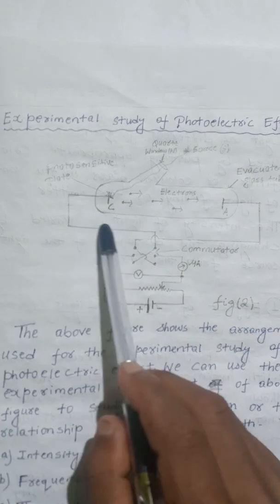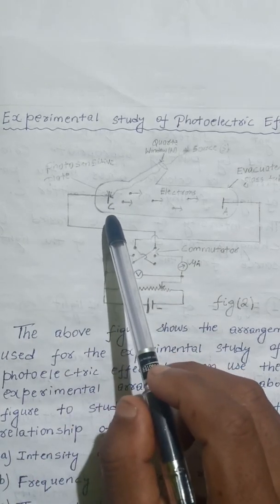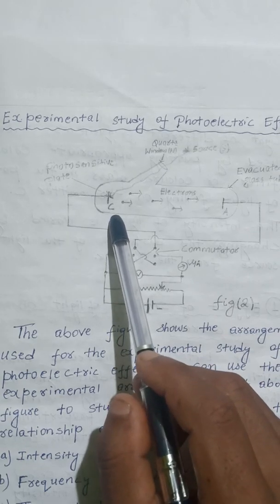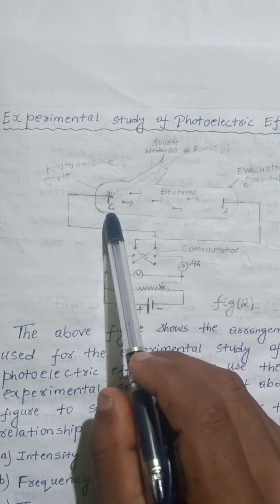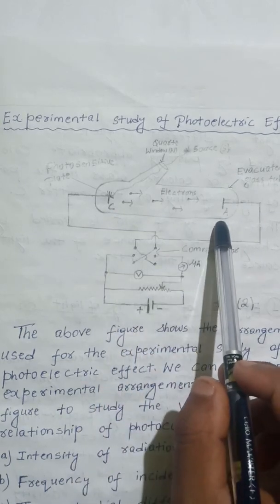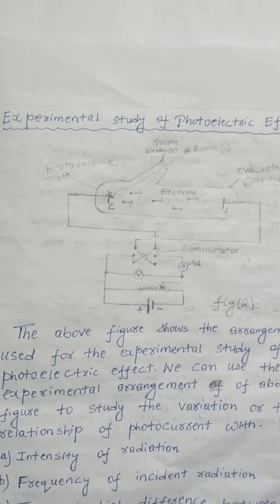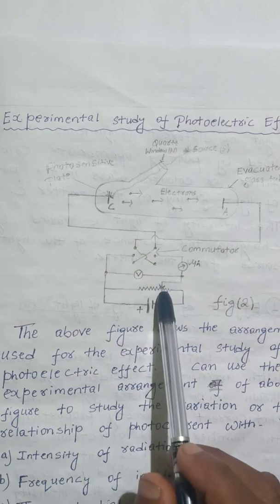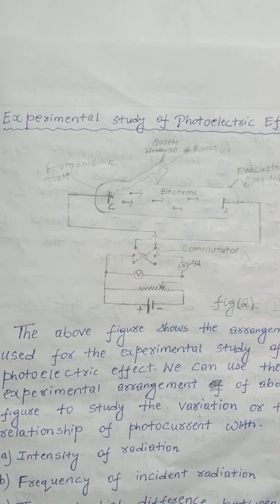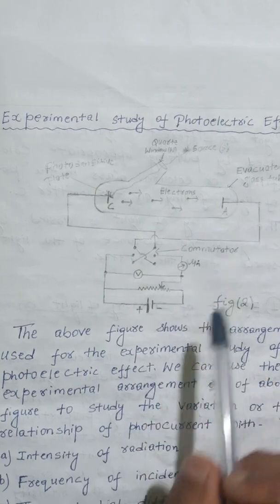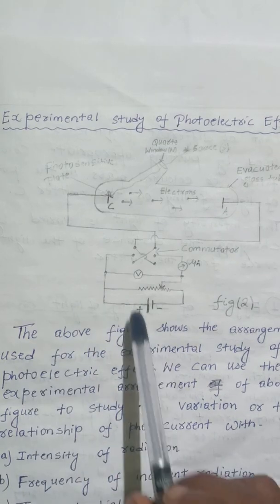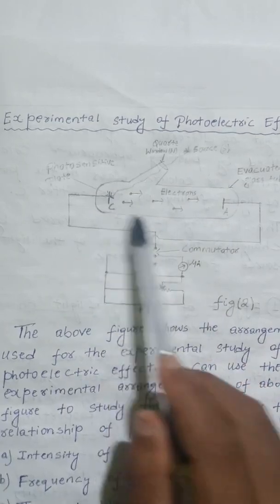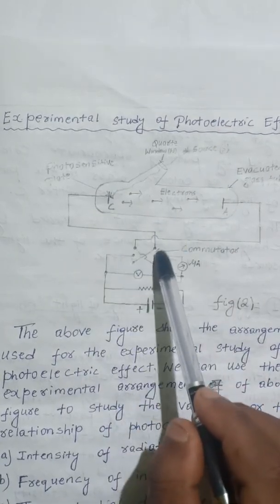The electrons are emitted from the photosensitive plate C and are collected by the plate A. That means plate C is the emitter and plate A is the collector. The battery maintains the potential difference between the plate C and A. The polarity of the plates C and A can be reversed with the help of the commutator.